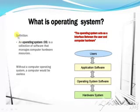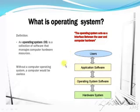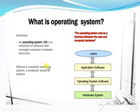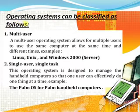What is an operating system? An operating system is a collection of software that manages computer hardware resources. The operating system acts as an interface between the user and computer hardware, and translators are used to translate. Without the operating system, our computer would be useless.